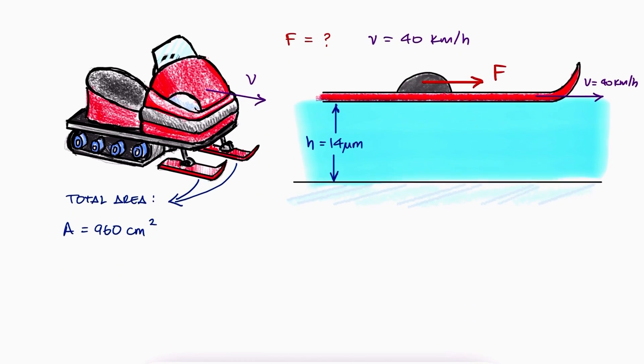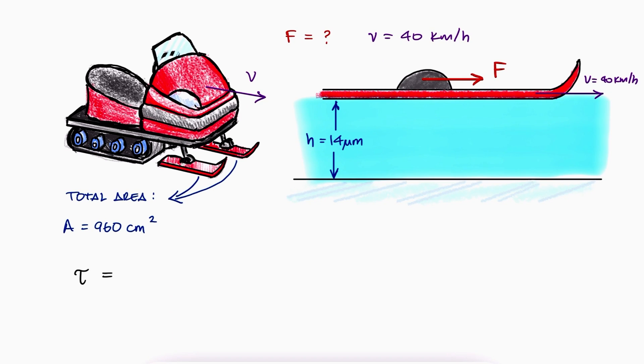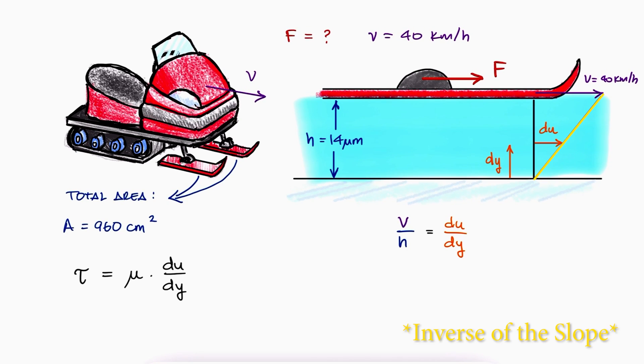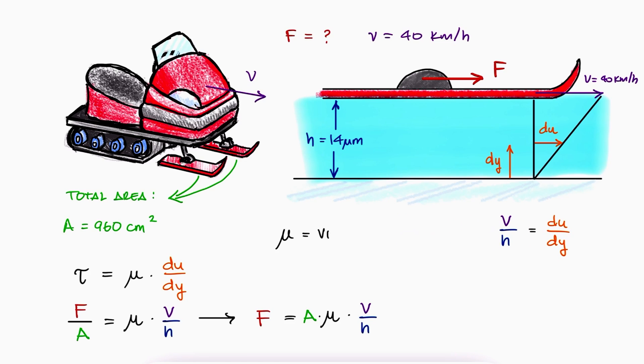A simplified schematic of the sleds over the ice with a thin film of water would show a rectangular plate of area 960 cm² positioned 14 microns above the static ice surface with water between them. The shearing stress would be the viscosity of water times the shearing strain rate du/dy. Since v/h equals du/dy, and shearing stress τ can be written as F/A, we can solve for F if we find the viscosity of water first.